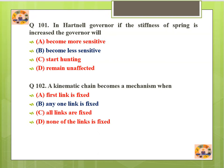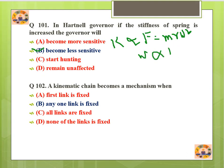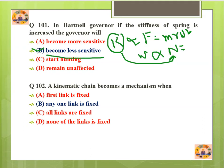Question number 101: In a Hartnell governor, if the stiffness of the spring is increased, the governor will become less sensitive. Stiffness k is proportional to force F = m*r*omega², where omega is proportional to speed. When stiffness increases, speed increases, and when speed increases the governor becomes less sensitive — sensitivity decreases with increased stiffness.